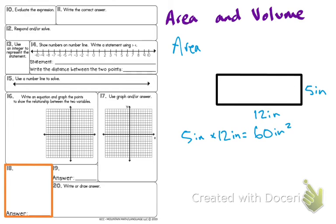5 inches times 12 inches will equal 60 inches squared. And that gives us our formula. The length times the width is equal to the area of a rectangle.